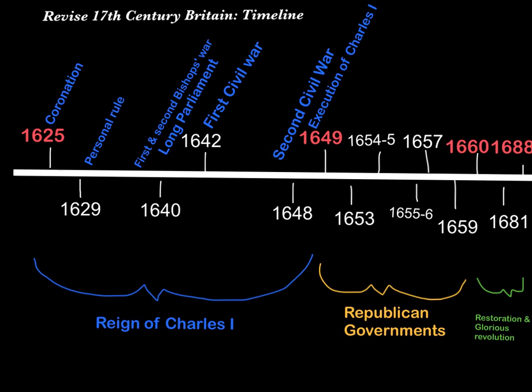Charles briefly escaped from Hampton Court and was then recaptured, having secretly made an agreement with the Scots that if they fought to help him regain control of the country, he would make some religious concessions for them. This led to the outbreak of the Second Civil War in 1648 to 1649. The war was fairly brief, and the Scottish troops were easily defeated by Cromwell's New Model Army. Cromwell started to accuse the King of treason, saying that by renewing civil war he was disloyal to the point of treason against his own country.